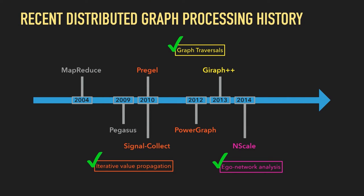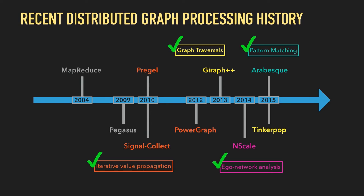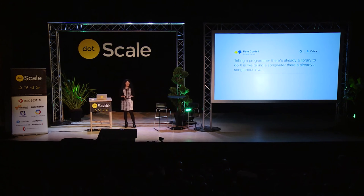nscale is very good for ego network analysis applications. In 2015, Arabesque introduces Think Like an Embedding — a model for pattern matching in graphs. You can produce and enumerate subgraphs and do graph mining applications. On the same year, TinkerPop introduces a language for graph traversals. There are many notable systems I haven't mentioned, and it seems we'll keep on developing more and more systems for graph processing. I found a tweet that perfectly describes my feelings about it — we cannot help it, we want yet another graph system.